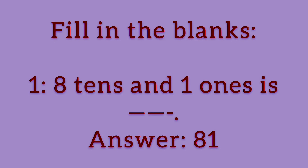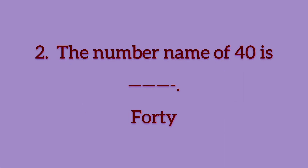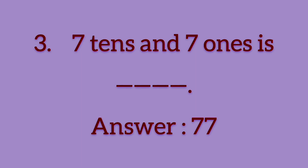Now go to fill in the blanks. The first question is: 8 tens and 1 one is? The number 8 comes in the tens place and the number 1 comes in the ones place. The answer is 81. Under the ones place the number 1 comes and under the tens place the number 8 comes. The second question: the number name of 40 is? F, O, R, T, Y — Forty. The third question: 7 tens and 7 ones is? The answer is 77.